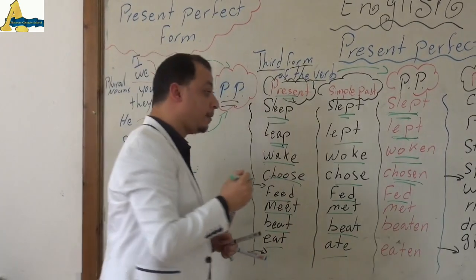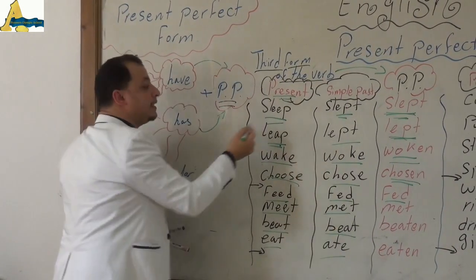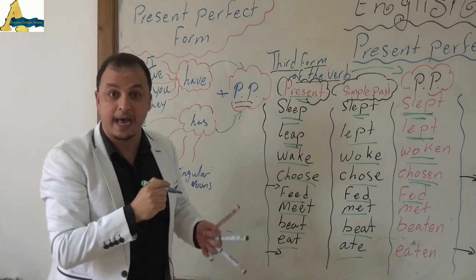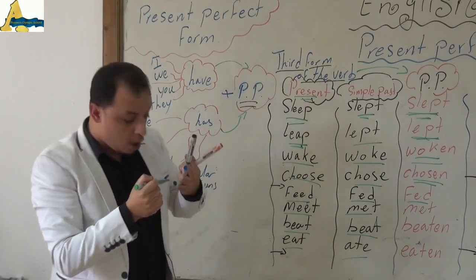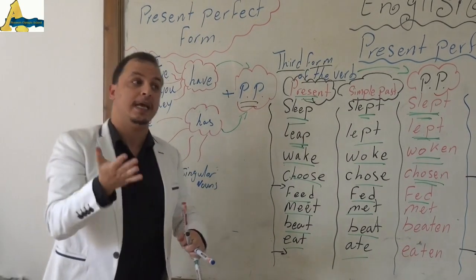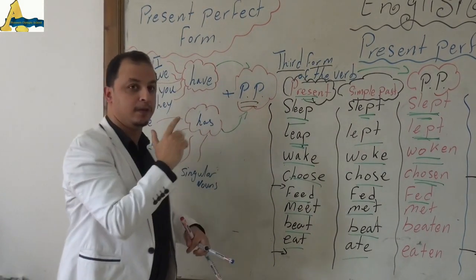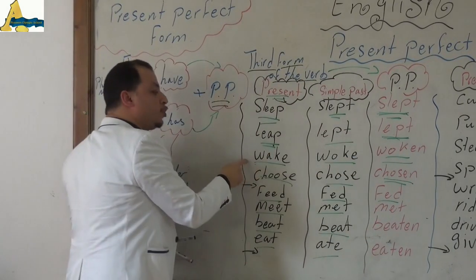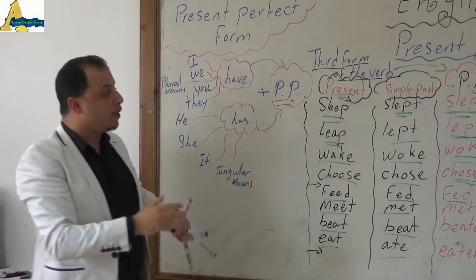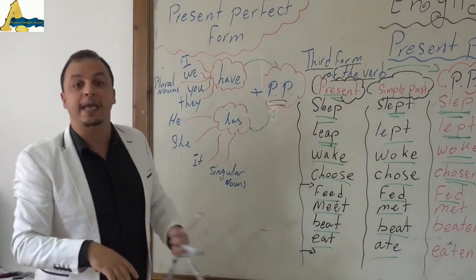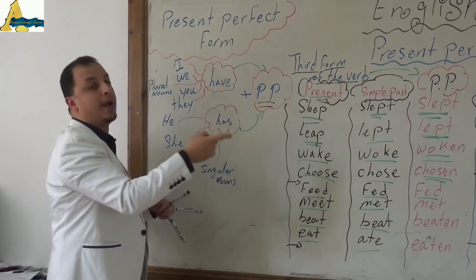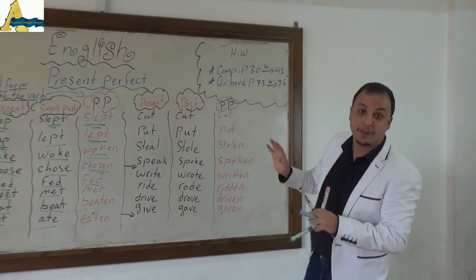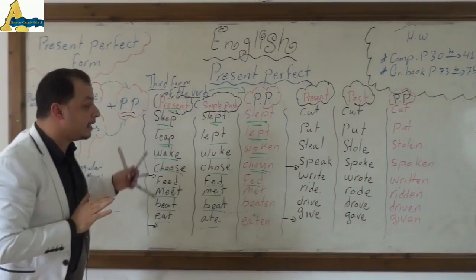We can set verbs in families. Look at the sound of the first verb: sleep, leap — with the same sound. Also creep and sweep. All of them share the same past form and third form which is the past participle. Sleep, slept, slept. Leap, leapt, leapt. Sweep, swept, swept. Creep, crept, crept — it's the same sound pattern.